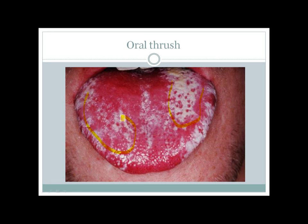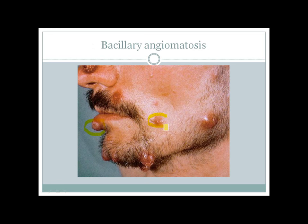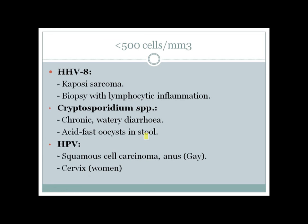Here you can see a patient with white patches over the tongue — those are Candida oral thrush. A smear will show pseudohyphae. Here you can see white patches on the lateral margin of the tongue that are not easily scrapable — that is oral hairy leukoplakia. Here you can see lesions of bacillary angiomatosis; biopsy shows neutrophilic inflammation due to Bartonella henselae.